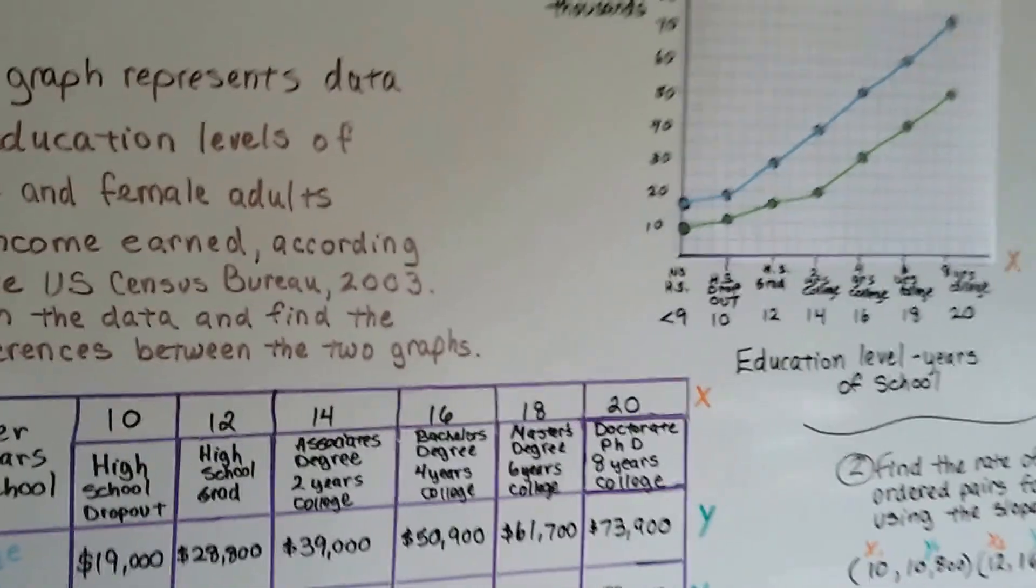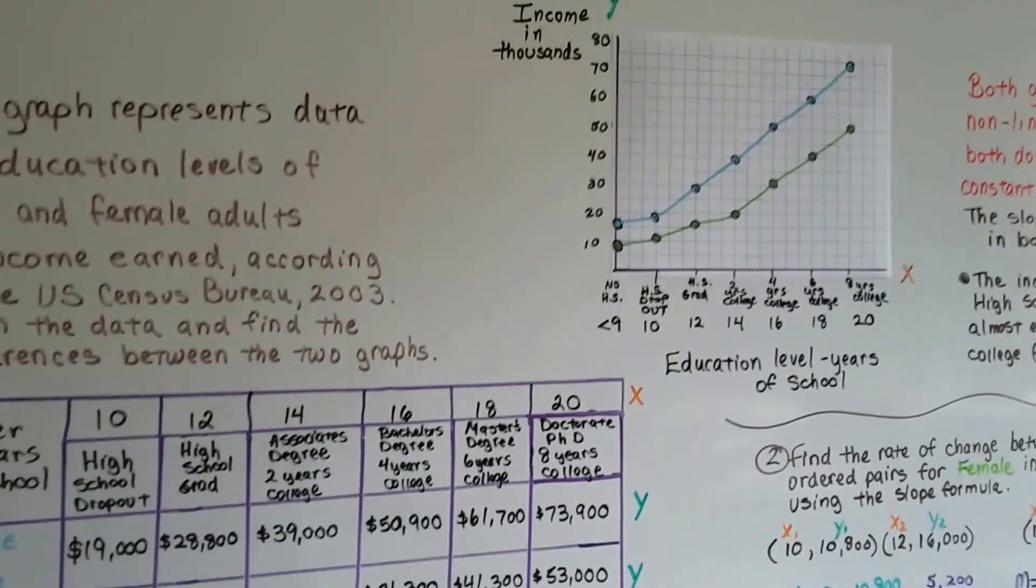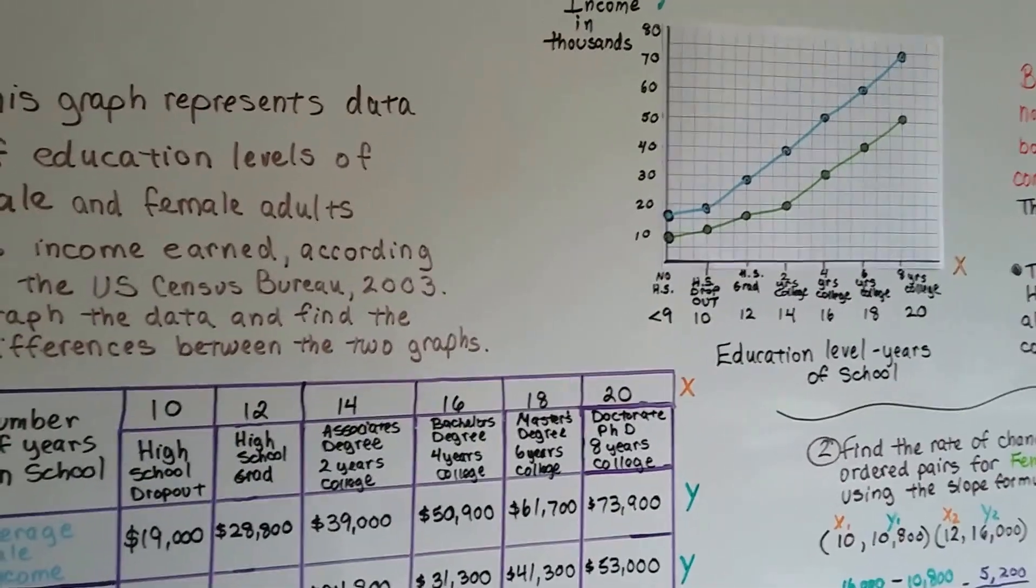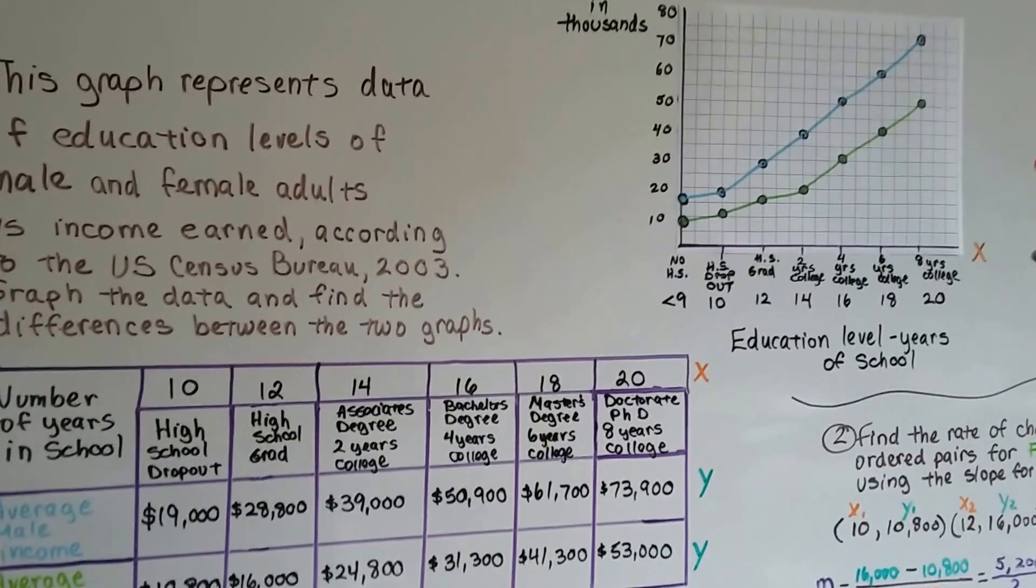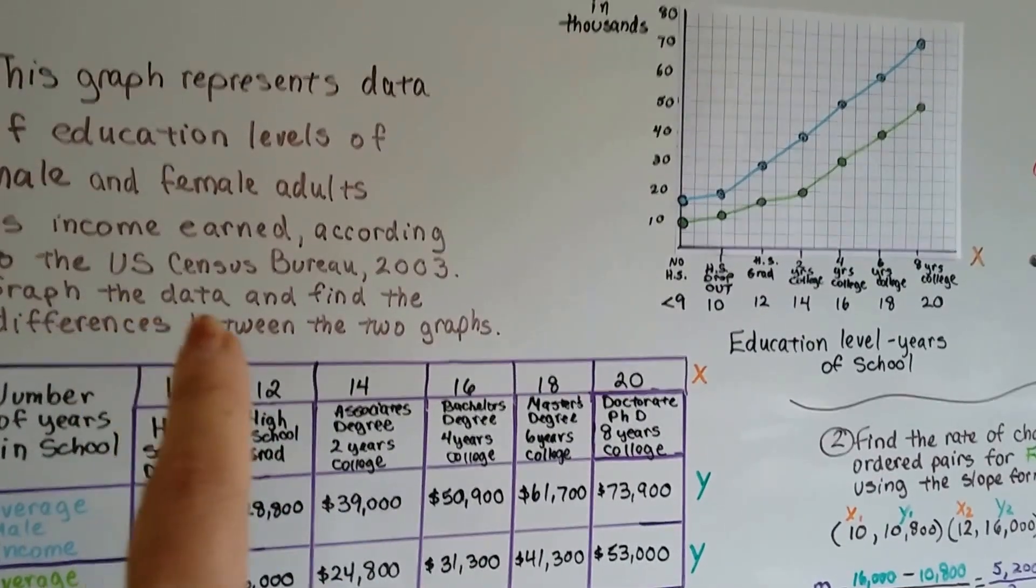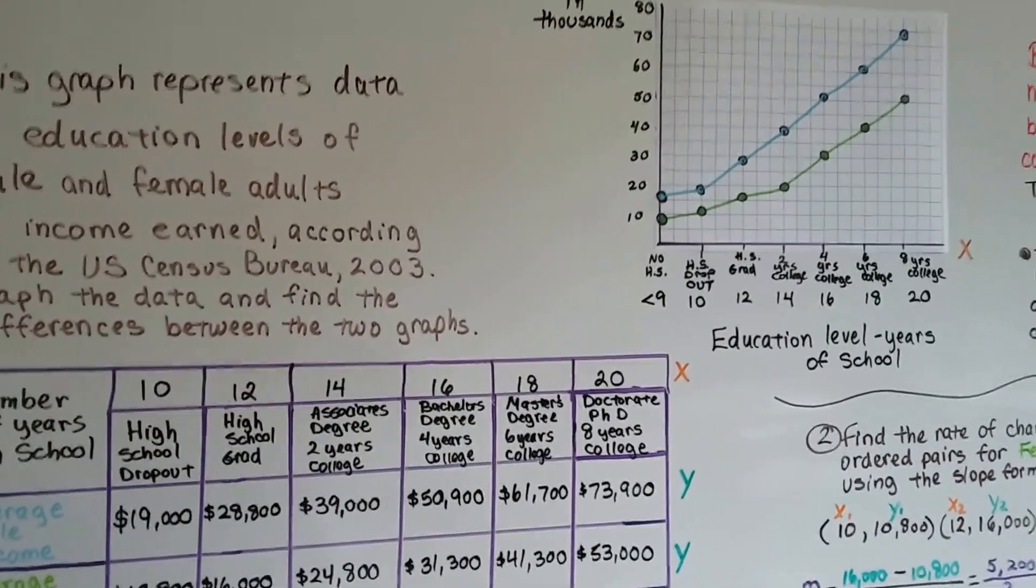This graph represents data of education levels of male and female adults versus the income earned, according to the 2003 census. We need to graph the data and find the differences between the two graphs.